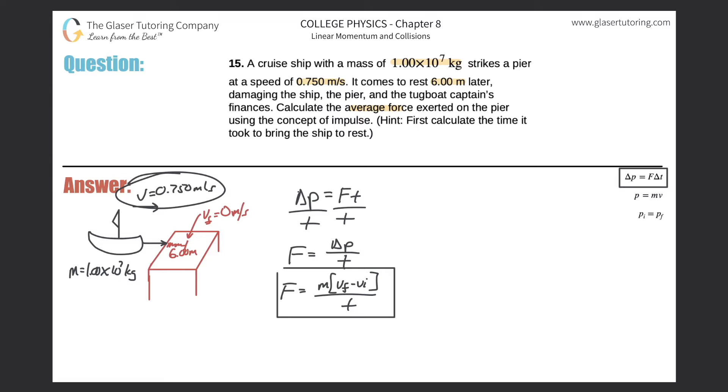Do we know the initial velocity of the ship? Sure, it was coming in at 0.75 meters per second. Do we know the time over which it took to stop the ship from 0.75 to zero? No, we don't. But we know the distance. So think back to kinematics. Here it comes again. We have to know these formulas. Even though you might not be tested directly on kinematics on your test coming up, it always keeps coming back.